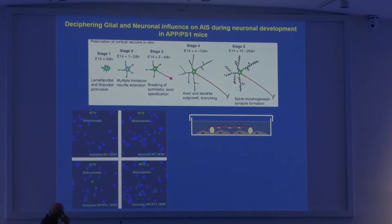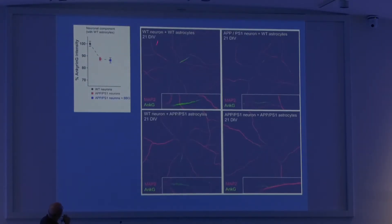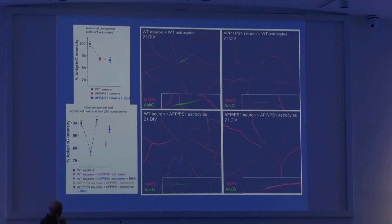Analyzing cultures at different ages — six days, before dendrites are large, and 14 days — AnkyrinG and axon initial segment assembly is still intact, even better than controls. However, at 21 days in vitro, when there are many spines and contacts, we see a neuronal component reduction in APP/PS1 mice — we lose AnkyrinG — that we cannot recover with P2X7 inhibition. However, taking glial cells from APP/PS1 mice, we see a reduction even larger than the one from the neuronal component alone, and this we could recover by inhibiting P2X7.